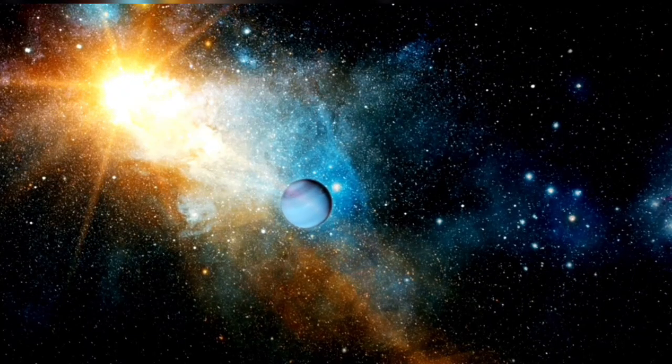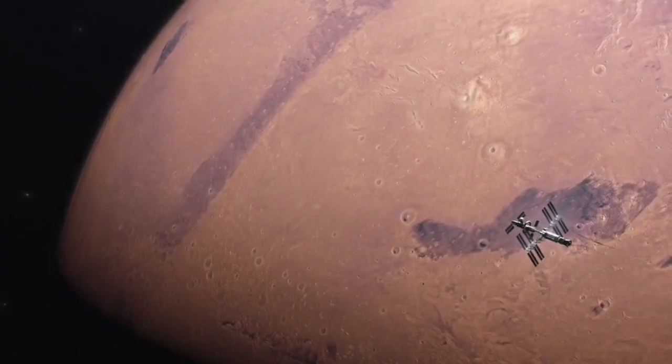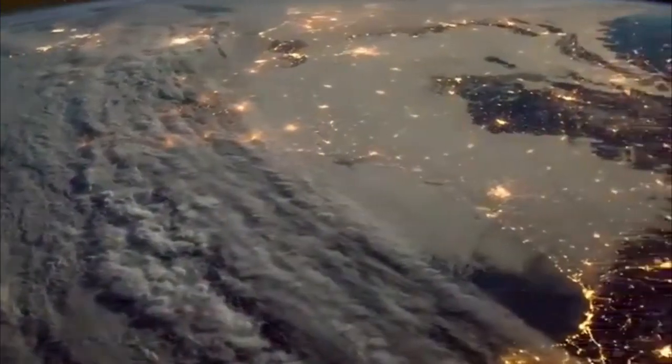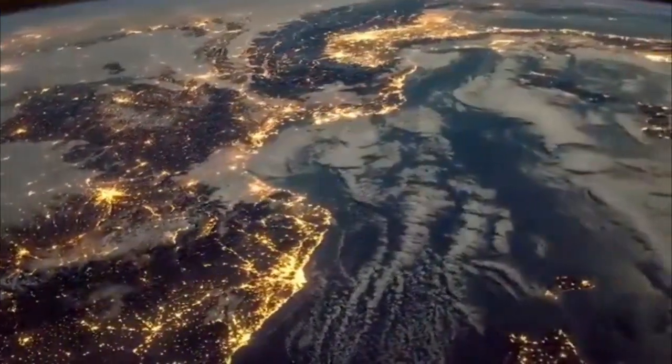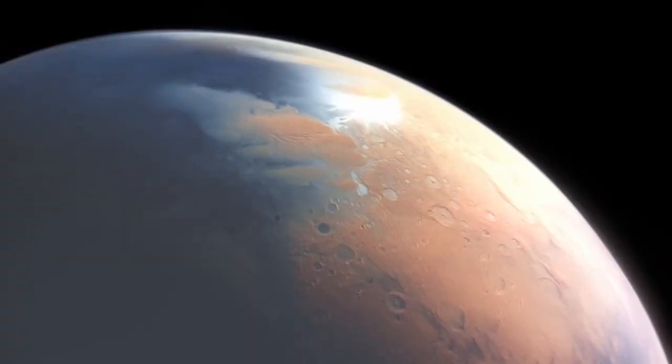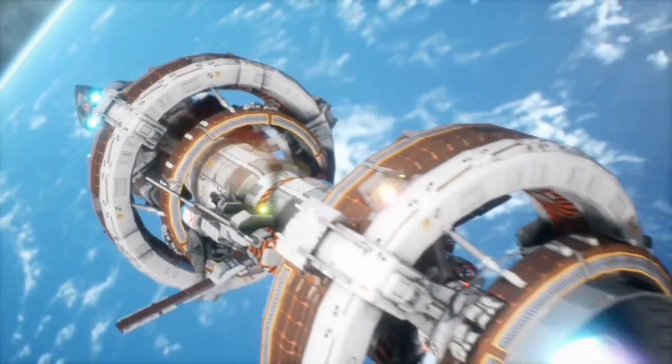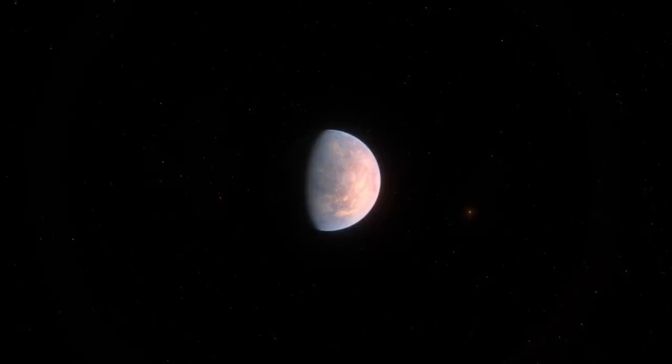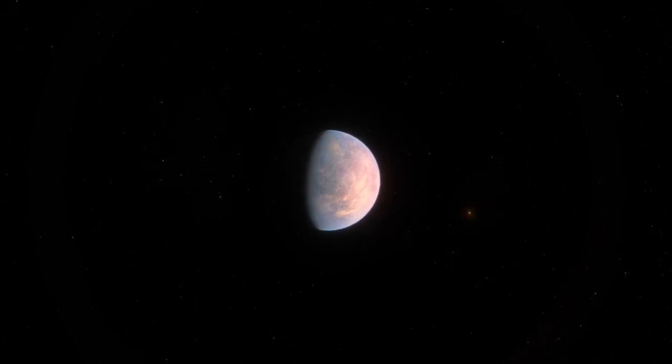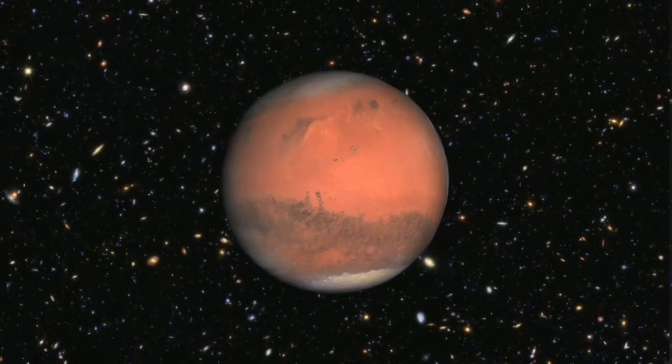This close proximity exposes Proxima b to intense stellar activity, including frequent solar flares and high levels of radiation, creating an environment starkly different from Earth's. The discovery of Proxima b was a monumental achievement in exoplanet research. Using the radial velocity method, astronomers detected subtle wobbles in Proxima Centauri's position caused by the gravitational pull of an orbiting planet. In 2016, the European Southern Observatory officially confirmed the existence of Proxima b, marking a breakthrough in the search for potentially habitable worlds beyond our solar system.